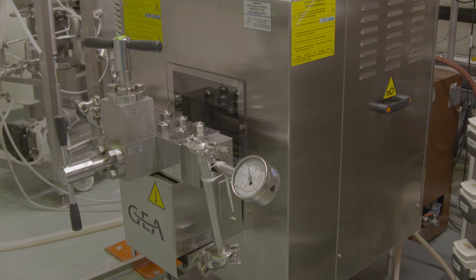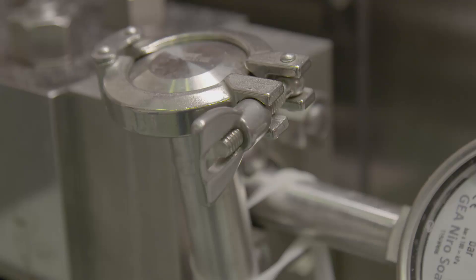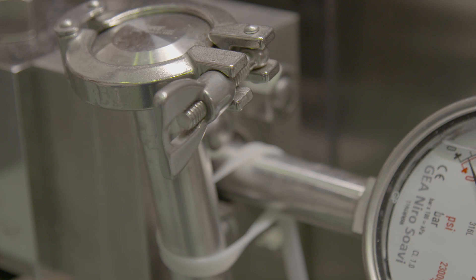In many microbial bioprocesses, the product is expressed intracellularly. As such, the product has to be released from the cells. Most commonly, this is done by high-pressure homogenization.